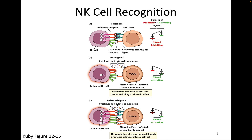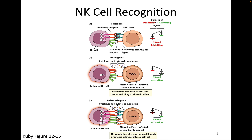In the previous lecture, we talked about NK cell recognition. Specifically, we discussed the importance of both NK inhibitory and NK activating receptors, which are shown here, and some of the specific ligands for the activating receptors, as well as the importance of MHC class 1 as a receptor for the inhibitory ligands. NK cells are really doing a sum of the different types of signals they are getting through multiple receptors.